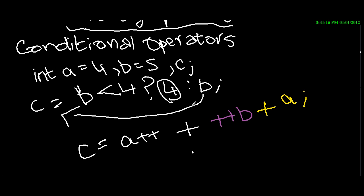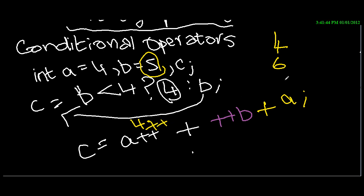What's the value of a initially? It's 4. Since it's a postfix operator, it will use 4 first and change the value after — so c starts with 4. Then plus-plus b: b is 4, and since it's a prefix operator it changes first, becoming 5, so we have 4 plus 5... wait, plus prefix plus-plus b makes b become 5, giving 4 plus 5 = 9... actually: a postfix is 4, prefix ++b is 5 (b goes 4→5), then plus a which has now incremented to 5. So c equals 4 plus 5 plus 5... giving c equals 15.